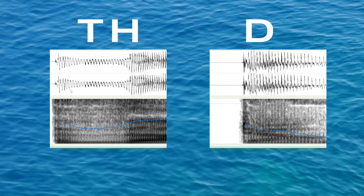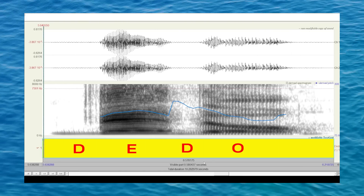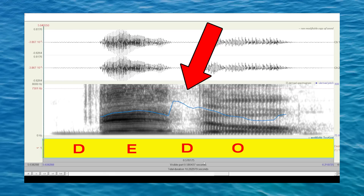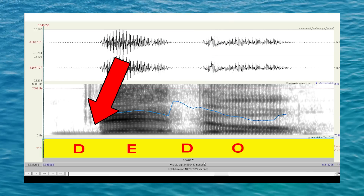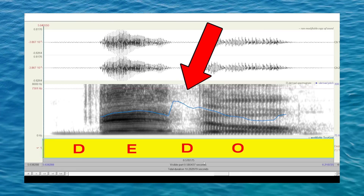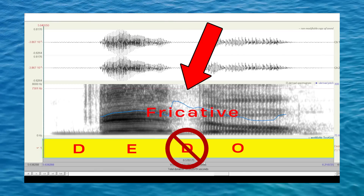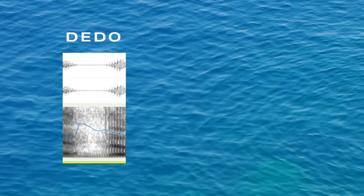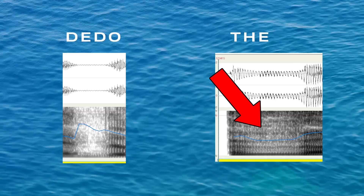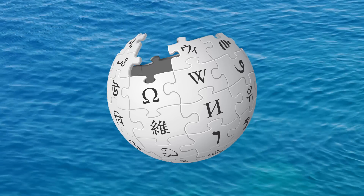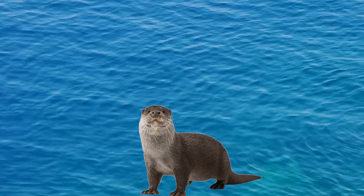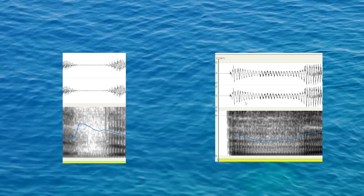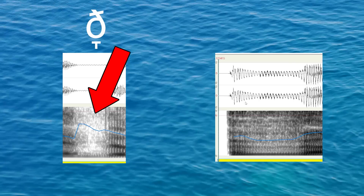Now that we know how the D and 'ð' sounds are supposed to look, let's take a look at the Spanish word 'dedo.' We can already tell there's a difference between the first D and the second D. The second D has much more noise associated with it, while the initial D just has a line at the bottom. The noise associated with the second D tells us it's a fricative consonant, so it can't be a D sound since D is a stop consonant — this is why linguists note it as a 'ð' sound. Comparing the second D in 'dedo' with the English word 'the,' the English 'ð' is much darker in color, indicating it's stronger, while the Spanish 'ð' is softer. This is why in Spanish phonology, linguists add a down-diacritic to the symbol, indicating the tongue is pulled slightly back from the teeth but still touching, which aligns with what we see in the spectrogram.